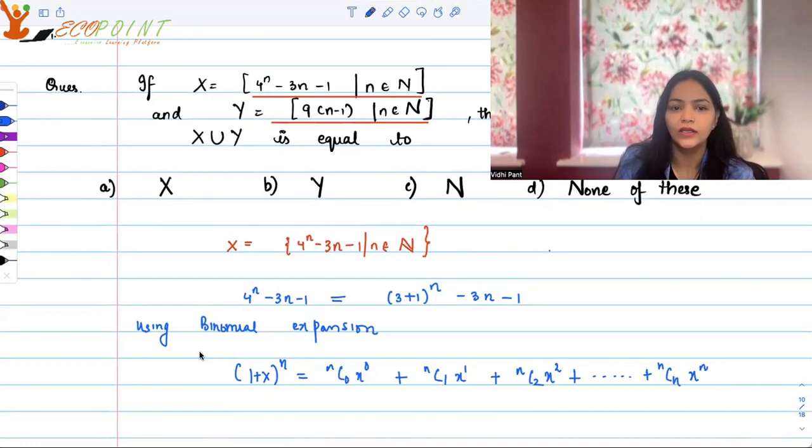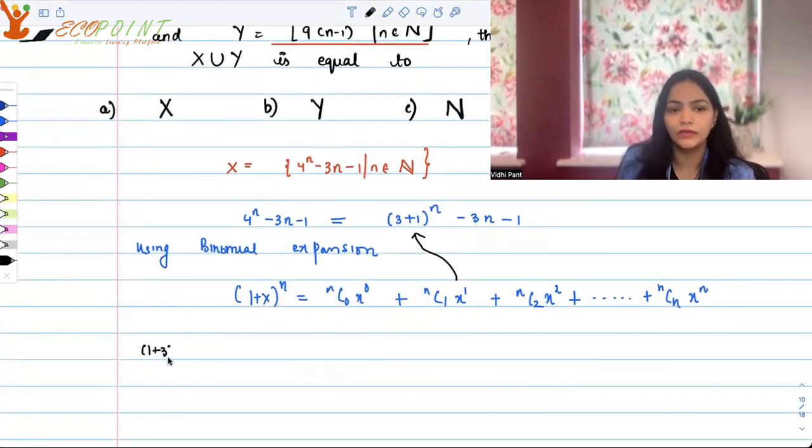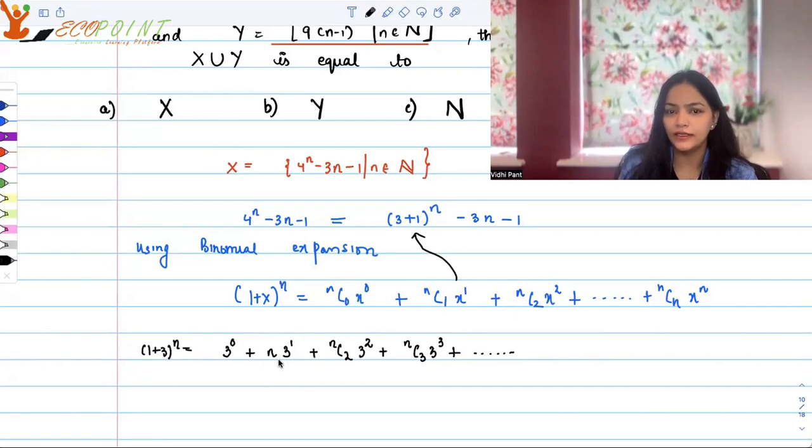So I'll be using this concept here in (1+3)^n. So what we can say is (1+3)^n is 3^0 nC0 + nC1·3^1 + nC2·3^2 + nC3 and so on till nCn·3^n. Okay, now the term that we have is 4^n - 3n - 1.